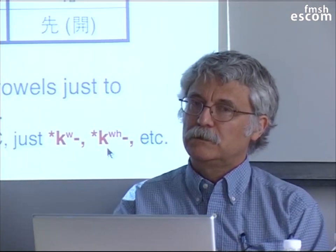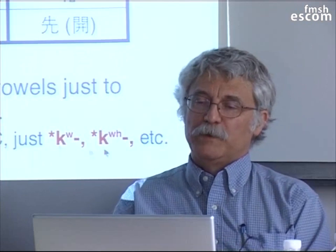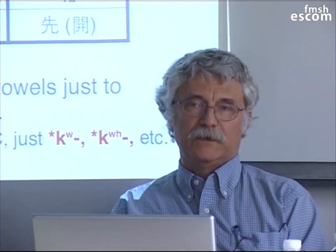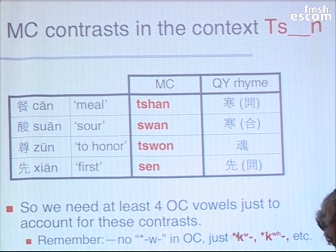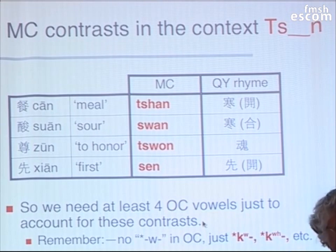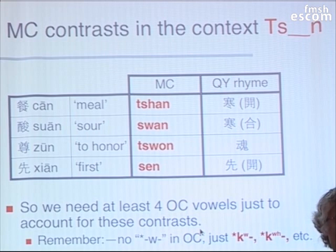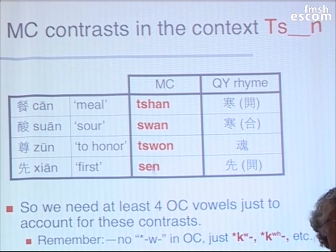So, I can't use a W-like element in Old Chinese by my hypothesis. This is part of the deductive part of the hypothetical-deductive process. We have a hypothesis that there was no W glide in Old Chinese. As a consequence of that, all four of these Middle Chinese syllables have to be reconstructed with different vowels. We have to have at least four.